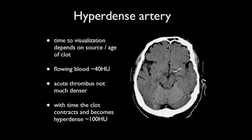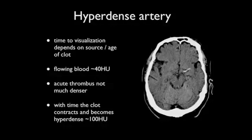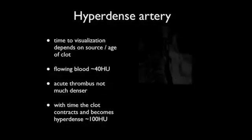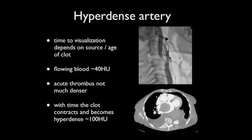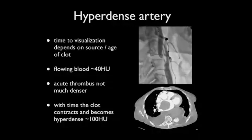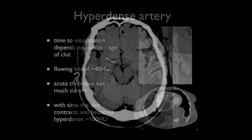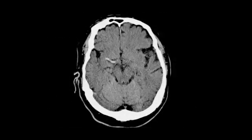Fortunately, the majority of ischemic strokes are due to thromboembolism, which is caused by clot forming either in the carotids or within the heart. As such, the clot that eventually embolizes and occludes intracranial circulation has been present for some time and is significantly hyperdense. In this case, we can see the right M1 segment of the middle cerebral artery is much denser than any of the other arteries seen.